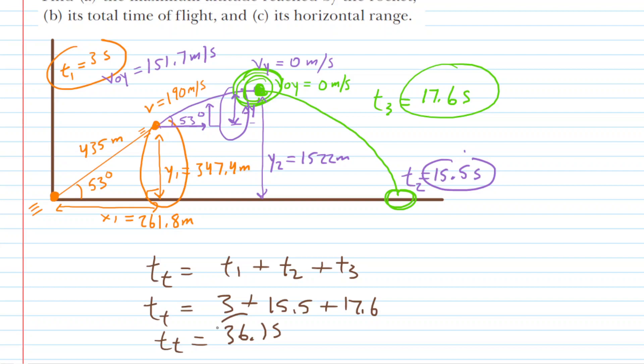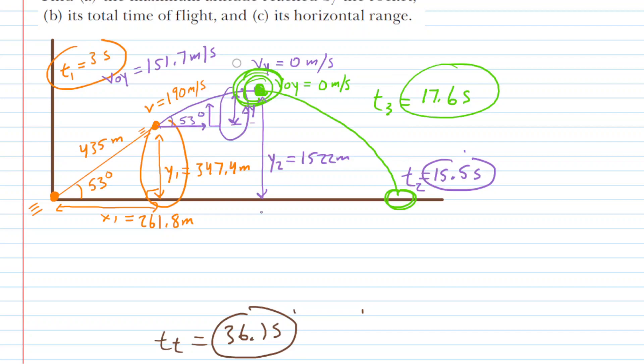Adding the three times together, the total time is about 36.1 seconds. This is the correct answer to Part B. Now on to Part C, which requires the total horizontal displacement. We already have x1. We still need to figure out x2, the distance along the purple segment, and x3, the distance along the green segment, and then add them all together.